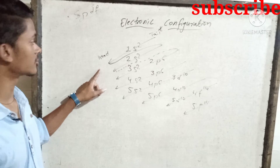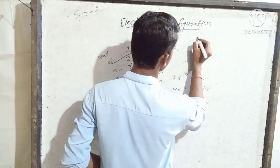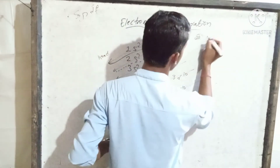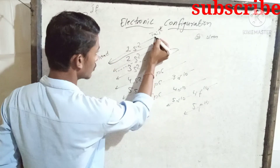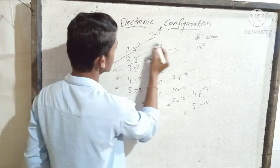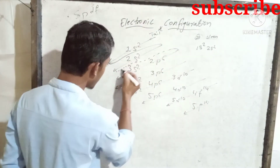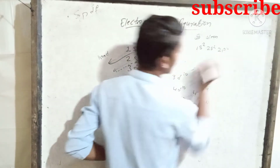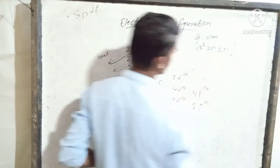So now we have to do an example of electronic configuration. We need to do the element with atomic number 10 — Neon. The configuration is: 1s2, 2s2, 2p6. Two plus two plus six equals ten. This is Neon's electronic configuration.